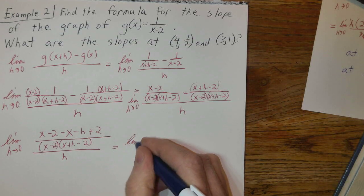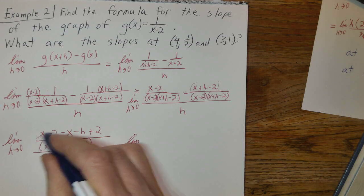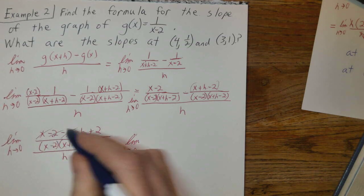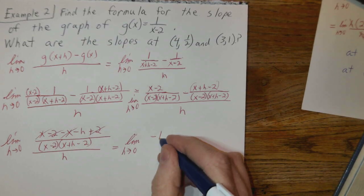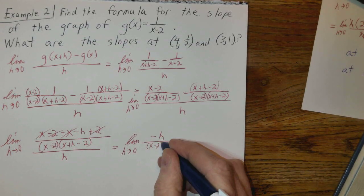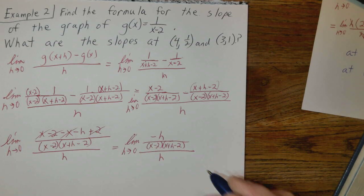The limit as h approaches 0, x minus x here, -2 and +2 here. I'm going to write -h over (x-2)(x+h-2) and put that over h.